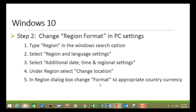Type region in your Windows search option and select your region language setting. Then select additional date, time and regional settings. And under region, select change location. In your region dialog box, change the format to the appropriate currency.